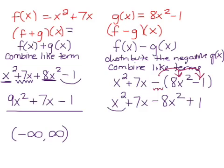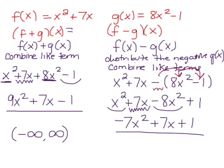Now we combine like terms. x squared minus 8x squared gives us negative 7x squared. And once again 7x doesn't have any like terms, so we keep it, plus 1. Our result is a polynomial, so our domain is negative infinity to positive infinity.